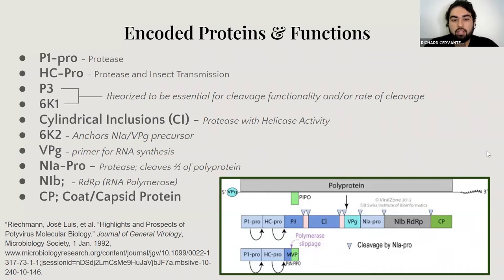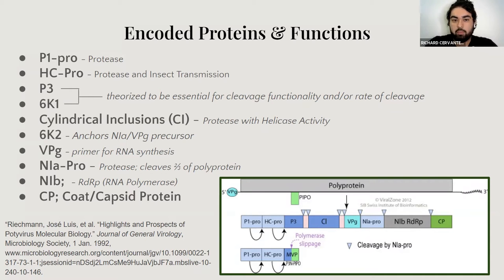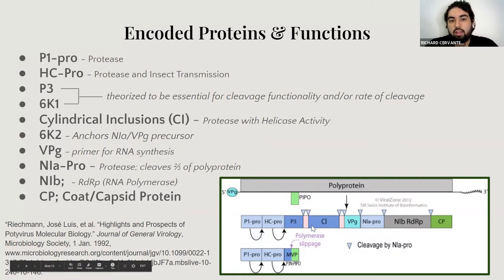There are plenty of proteins encoded in this single-stranded RNA molecule. P1 protease simply cleaves itself from HC-Pro. HC-Pro proteases itself away from P3. It also helps attach the coat proteins to the aphid receptors, which allows transmission between plants. Next, we have the P3 and the 6K1 protein, which are theorized to be essential for cleavage functionality and control the rate of cleavage. Next, we have a protein that encodes for the cylindrical inclusions.